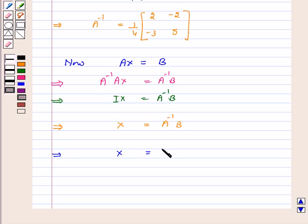This implies X is equal to A inverse, which is 1 by 4 into the matrix 2, minus 3, minus 2, 5, into B, which is 3, 5.